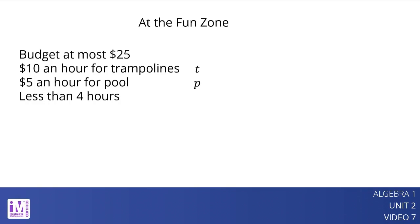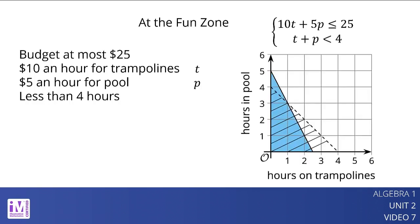The constraints can be represented with a system of inequalities: 10t plus 5p is less than or equal to 25, and t plus p is less than 4. Here are graphs of the inequalities in the system on the same coordinate plane. The solution set to the system is represented by the region where the shaded parts of the two graphs overlap. Any point in that region is a pair of times that meet both the time and budget constraints.